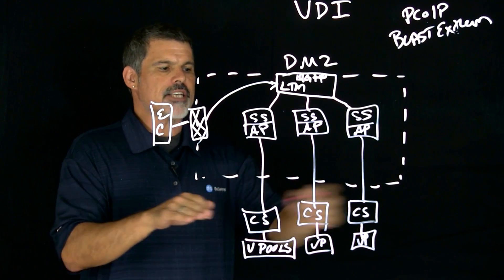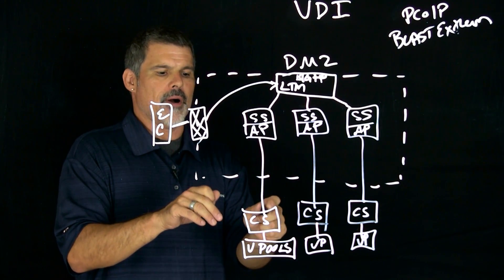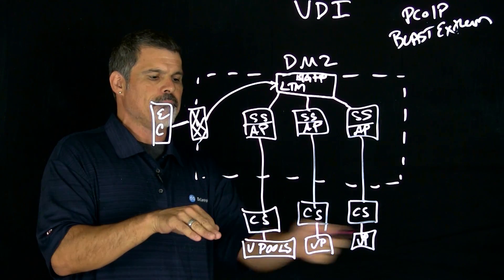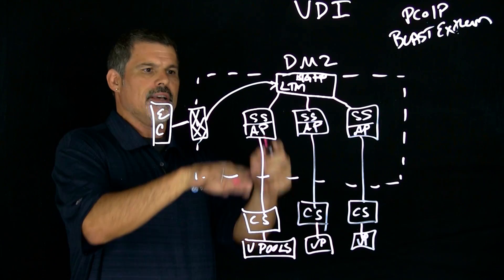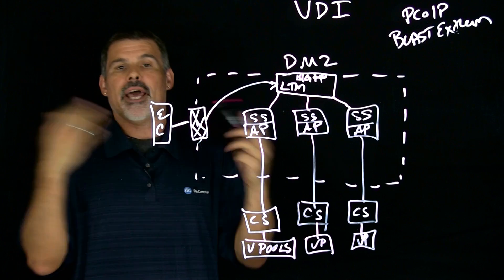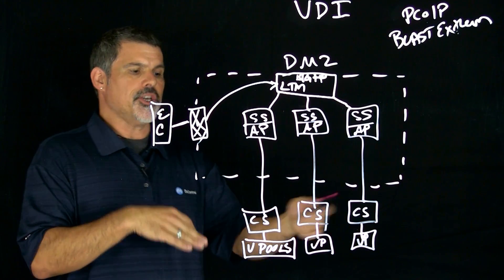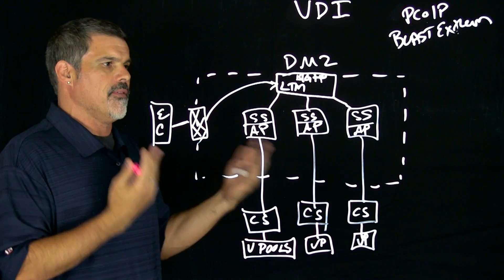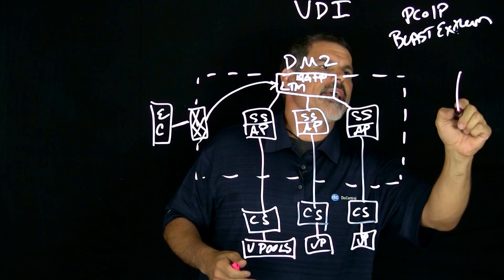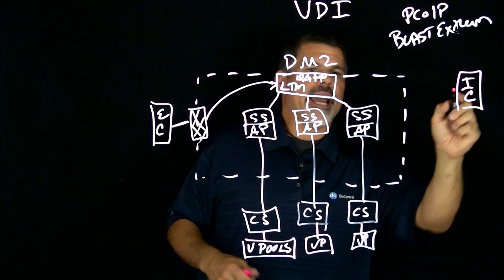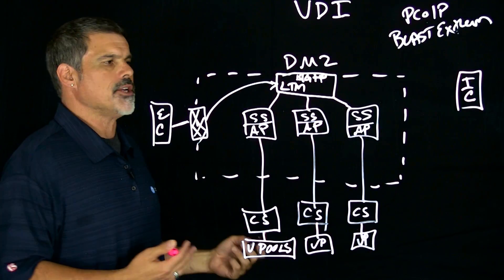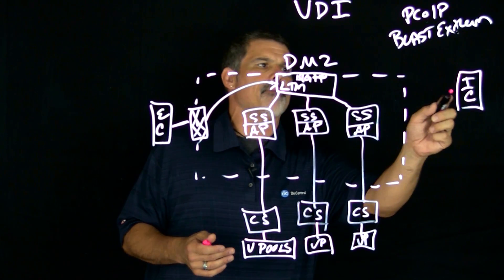So once everything is verified and they get to their specific virtual desktop here, then the connection goes back out and goes to the external user. They get their virtual desktop and they're off and running. Over here we have the internal clients. And since they're already on the domain, they've already been authenticated to come in.